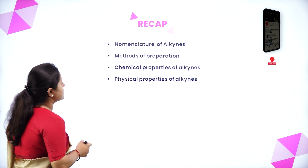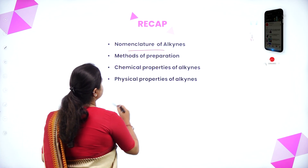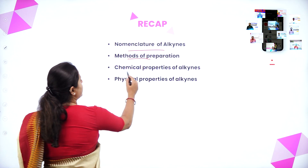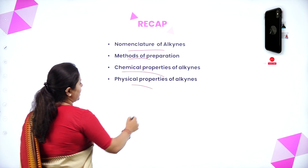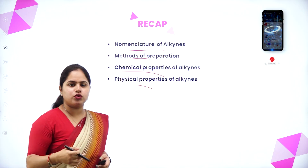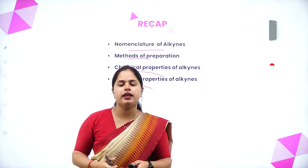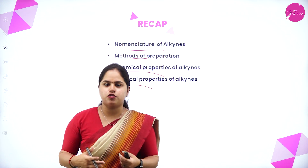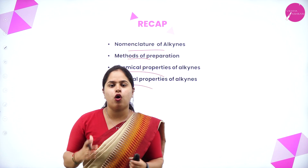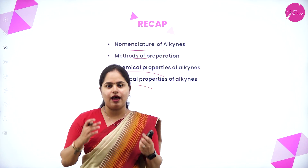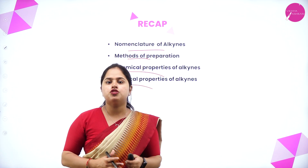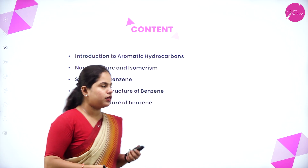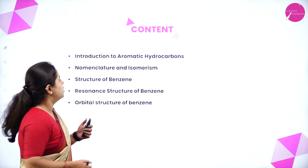In the last session, we discussed about the nomenclature of alkynes, methods of preparation of alkynes, the chemical properties as well as the physical properties, also the isomerism in alkynes. We completed all the methods of preparation, physical and chemical properties regarding alkynes. So today, we are moving on to the last part of your chapter, that is aromatic hydrocarbons.